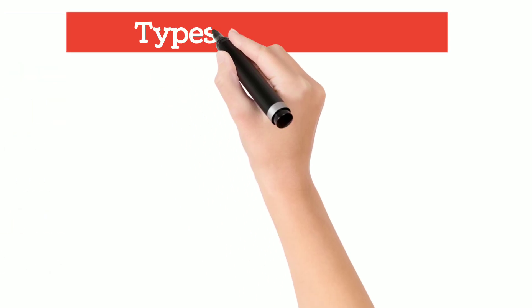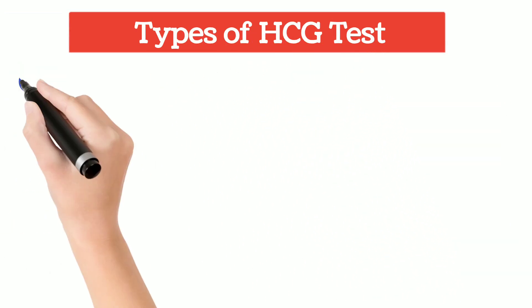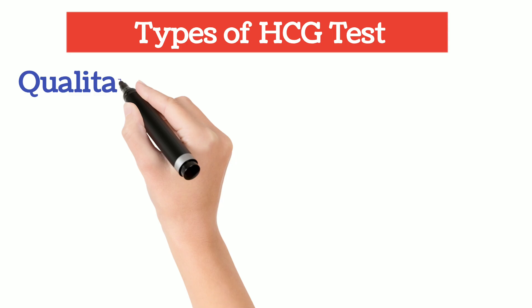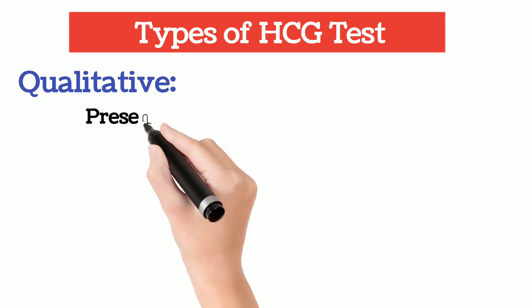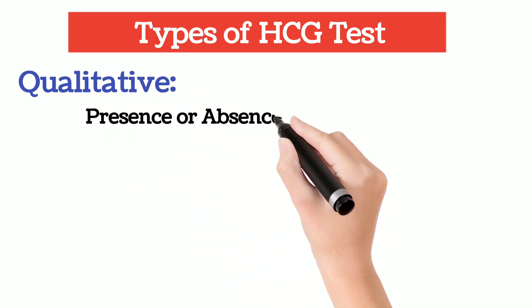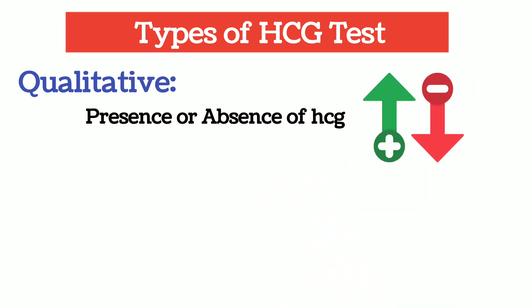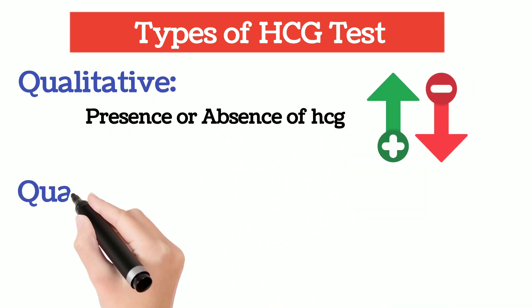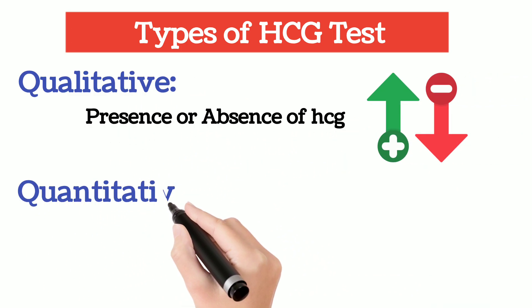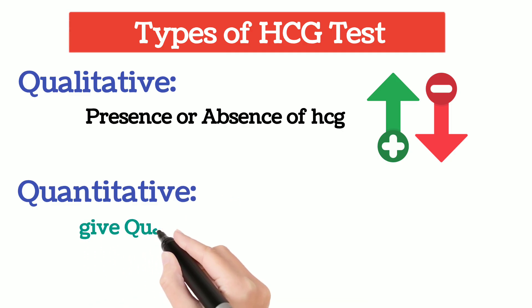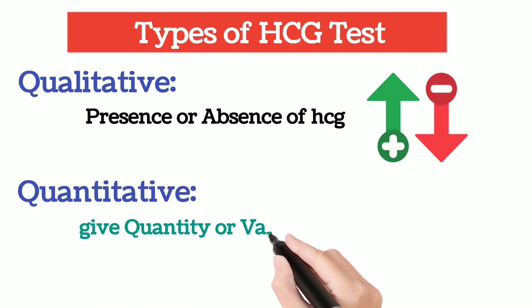There are two types of ECG test: qualitative, which only tells you the presence or absence — a positive or negative result — while the quantitative test gives the exact value or quantity of the ECG hormone.